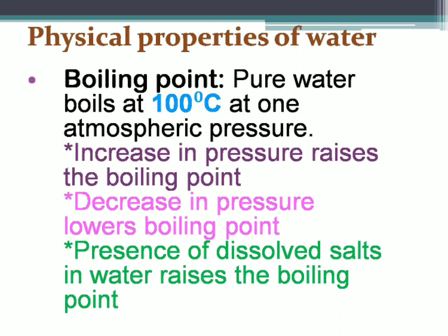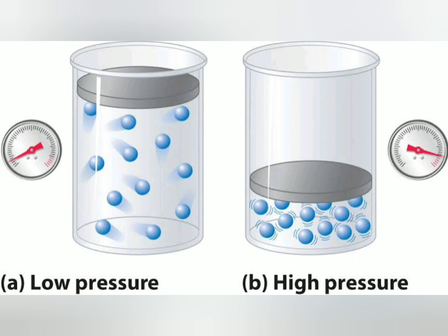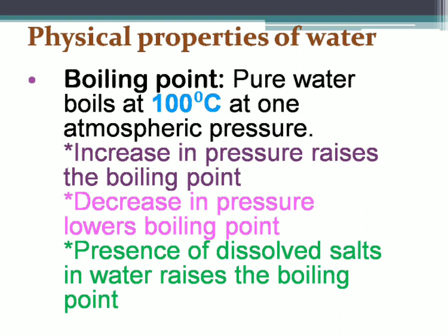To boil water means to convert it from liquid state to gaseous state, and this can happen only if the molecules of liquid water move far apart from each other. If we increase the pressure on liquid water, its molecules come closer to each other, the intermolecular forces increase, and thus more heat energy — a higher temperature — is required to break the attraction between molecules. Hence water boils at a temperature higher than 100°C when pressure is increased above one atmosphere.